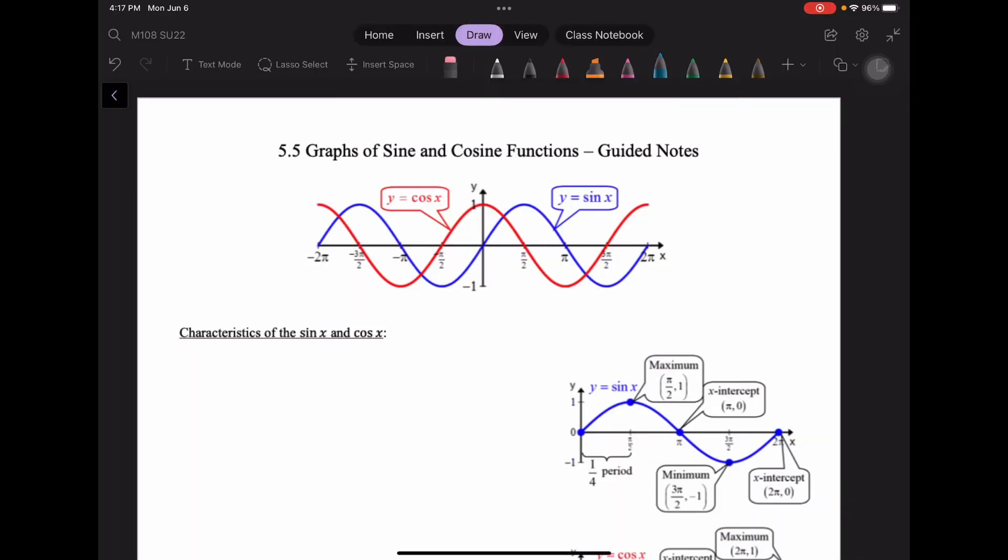Here we have an image of the graphs of cosine and sine. Cosine is in red, going through the y-axis at (0, 1), sine going through the origin in blue. And so notice, like I said, they've got these valleys and peaks that are equal.